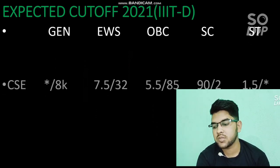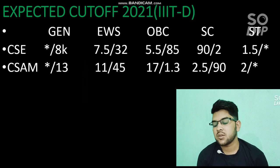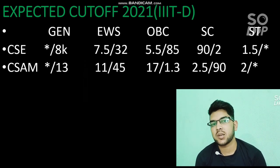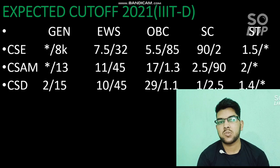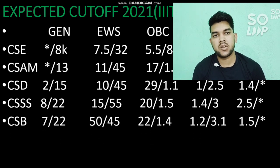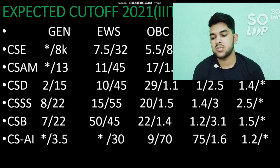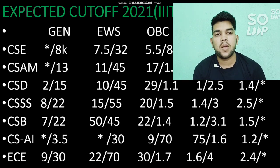For IIIT Delhi expected cutoff 2021: CSC for Delhi students — 8,000; CSAM — 13,000. There are no outside state seats in these two branches; wherever a star is shown, that category or branch is not reserved in IIIT Delhi. CSD branch — 2,000 and 15,000. CSSS branch — 8,000 and 22,000 for general. CSB branch — 7,000 and 22,000. CSCAI branch — 3,500 for Delhi region students. EC branch — 9,000 and 30,000 for general. Other categories can be checked by pausing the video.